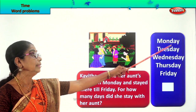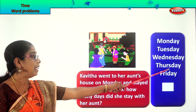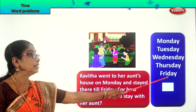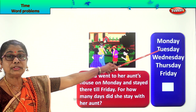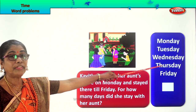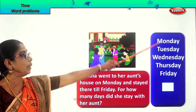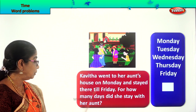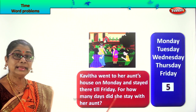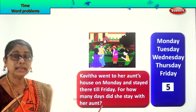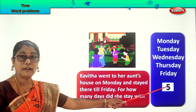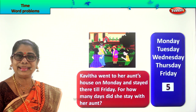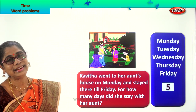Monday she goes there, then Tuesday, Wednesday, Thursday, and she stayed there till Friday. So she goes on Monday, stays on through Tuesday, Wednesday, Thursday, and till Friday. That gives us one, two, three, four, five days Kavita stayed at her aunt's place. For how many days did she stay with her aunt? Kavita stayed with her aunt for five days — Monday to Friday. She goes on Monday and leaves on Friday.